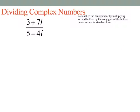Lastly, dividing complex numbers. Having an i in a denominator is the same as having a root in the denominator, which is not allowed. So we multiply top and bottom by the conjugate of the denominator, which is 5 plus 4i. In the top we FOIL: first gives 15, outers give 12i, inners give 35i, last gives 28i squared.